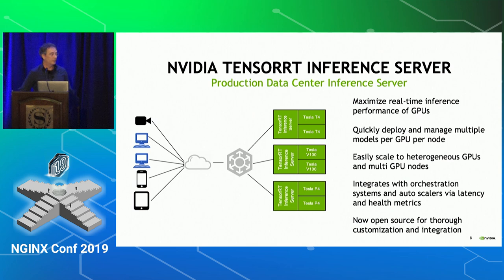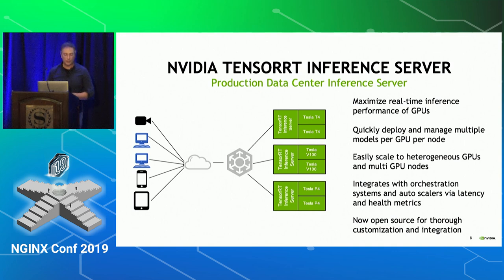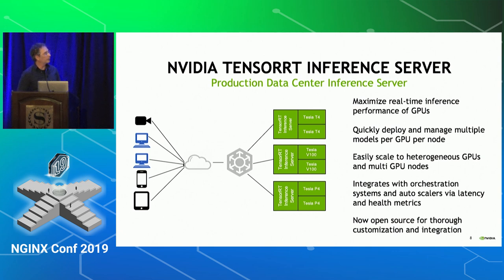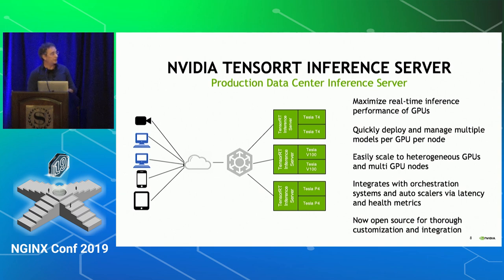The NVIDIA TensorRT inference server is our way to address these challenges. The big picture is that you have clients on the left side sending requests to a cloud application, which forwards the request to a load balancer, which in turn tries to identify the best TensorRT instance to run inference on. Here I'm showing different hardware for each instance of TensorRT, so you have heterogeneous hardware. TensorRT was presented in September 2018, it's currently open source, it can use heterogeneous GPUs, and it enables inference on multiple frameworks. It integrates with orchestration systems like Kubernetes.